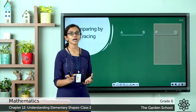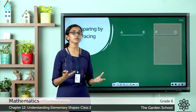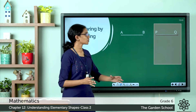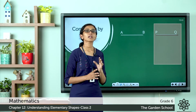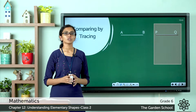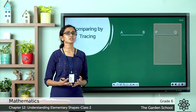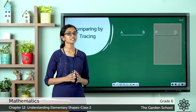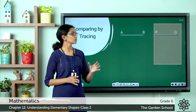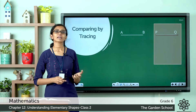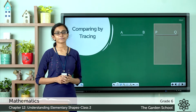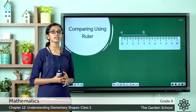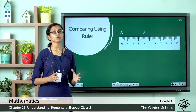You have a replica or copy of line segment AB on the tracing sheet, which you can use to compare the length of line segment PQ with. However, this method is also not so reliable because we cannot apply it in all cases. Let's see another method: comparing line segments using a ruler.